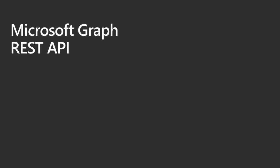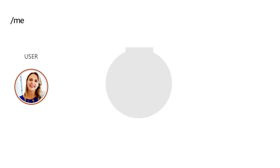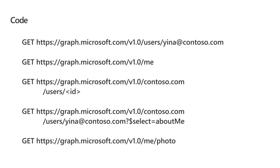It all starts with the 'me' endpoint, which gives you a reference to who you are or your information inside of the Microsoft Graph. From there you can pull in things like your mobile phone, address, name, title, photo, and aliases. You just issue a GET request — for example, going to /users with a specific ID, or /me for your own info, or /contoso.com/users with a user ID. You can get a specific property like 'aboutMe' using the select query string parameter, and also get a photo for that individual.